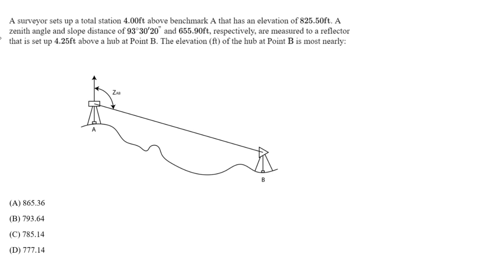We have to understand what a total station survey is. It's a more automated type of survey using an electronic measuring instrument. It's very common on construction sites, with high accuracy and position. Readings are automatically corrected for temperature and pressure differences, making it more automated and easier to use — that's why it's recommended for construction sites.